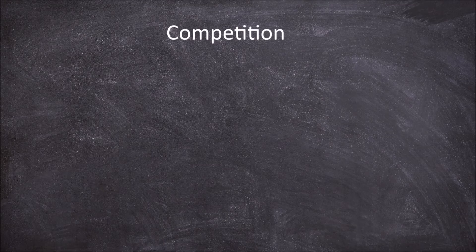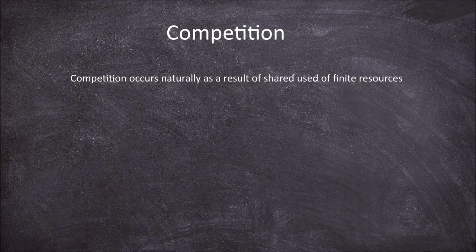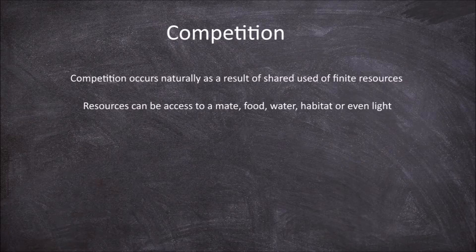In this video we're going to go over competition, both within species and between species. Competition is a form of species interaction that occurs naturally as a product of the shared use of a finite resource. This resource could be access to a mate, to food, to water, to habitat space, or even to light. Competition is a negative-negative interaction because both sides of the interaction have to give something as they are sharing a resource.